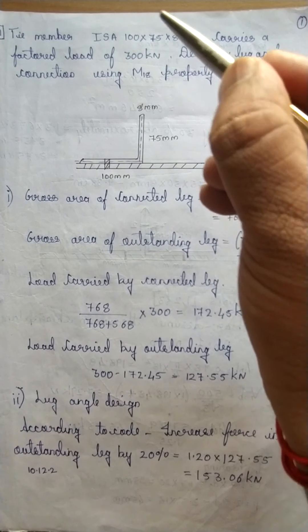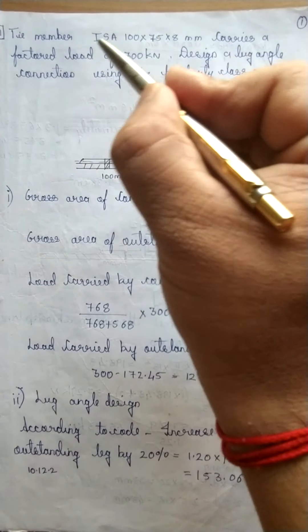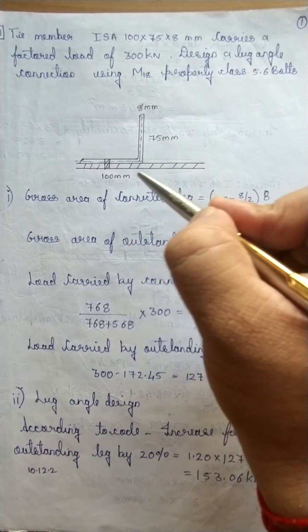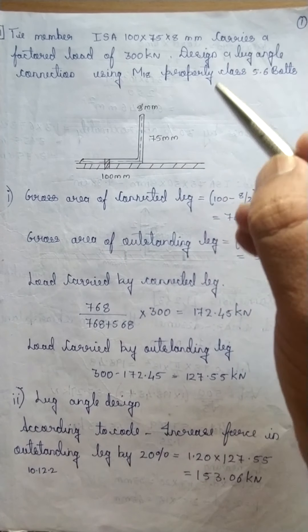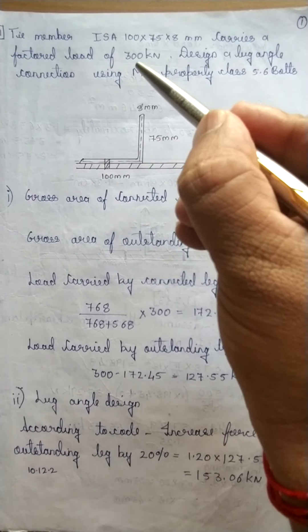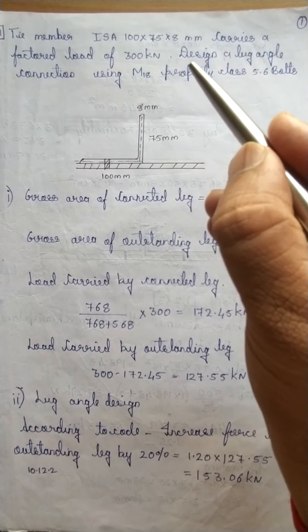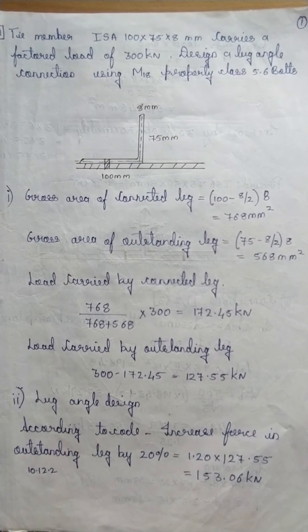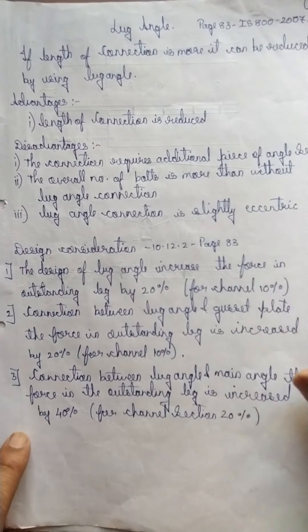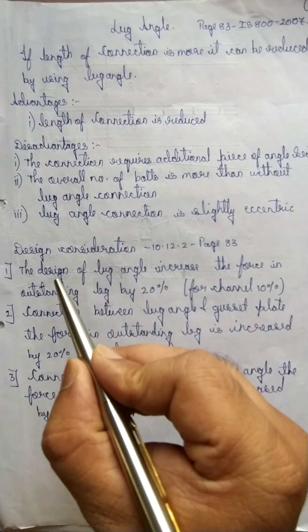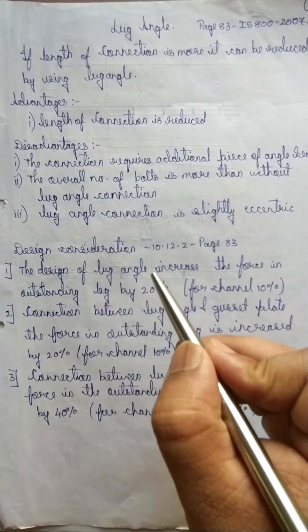This is the diagram wherein the connection has been given. The tension member ISA 100 by 75 by 8, meaning the 100 mm leg is connected to a gusset plate, which carries a load of 300 kilo Newton. We have to design the lug angle. As discussed in the previous lecture, these are the design considerations given for the design of lug angle.